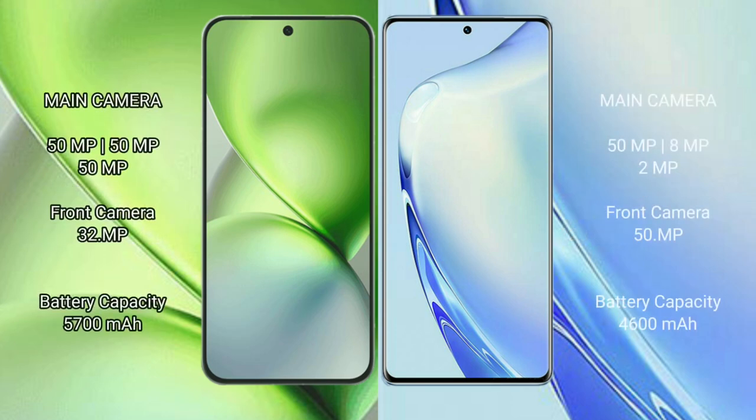Vivo X200 Pro Mini features a triple rear camera setup of 50MP plus 50MP plus 50MP, and a 32MP front camera. Vivo V27 features a triple rear camera setup of 50MP plus 8MP plus 2MP, and a 50MP front camera.